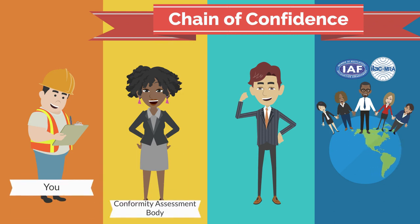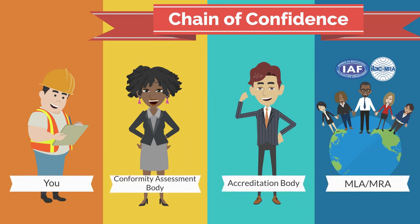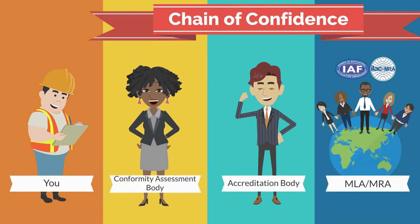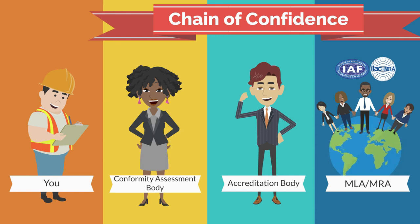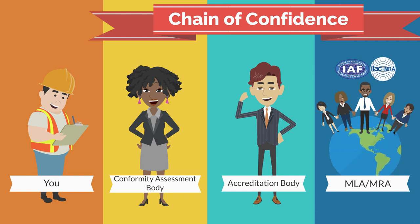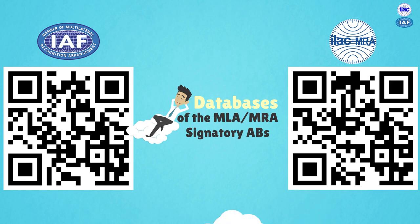This way, you've verified all the components of the chain of confidence from the conformity assessment body to its accreditation body to the mutual recognition status. You can find the list of the MLA and MRA signatories under these QR codes.